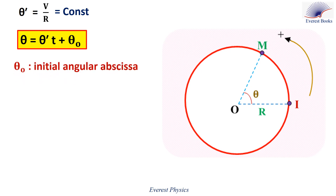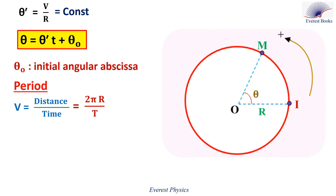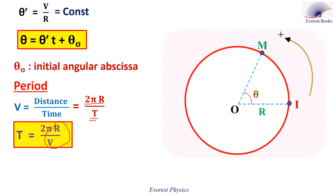Theta zero is the initial angular abscissa — it is the angular abscissa of particle M when we start timing. The period is the time needed by the particle to complete one cycle or to cover one complete circular path. To calculate the speed when it is constant, we divide the distance by the time. When the particle completes one cycle, it covers a distance equal to the circumference of the circle during a time equal to the period. Rearranging: T equals 2π R over V. Since theta prime equals V over R, then R over V equals 1 over theta prime, so the period can also be written as 2π over theta prime.